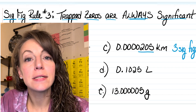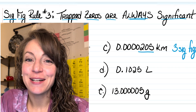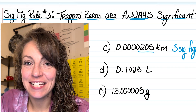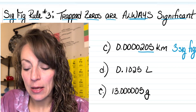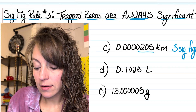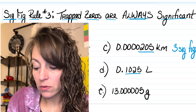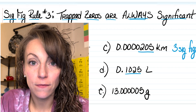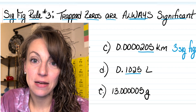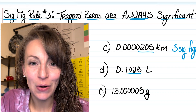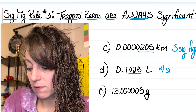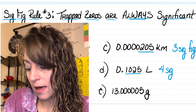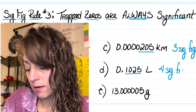In letter D I once again have a leading zero, so we're going to ignore that. But the one, the zero, the two, and the five after that decimal point are all significant, so I have four sig figs in that measurement.